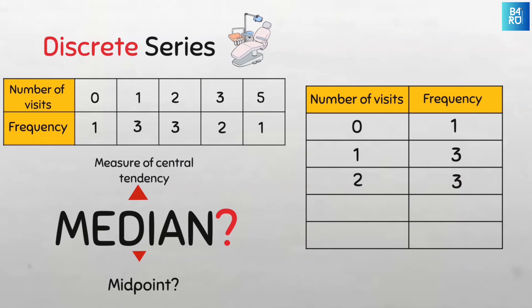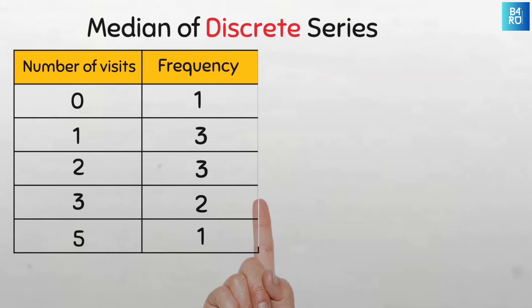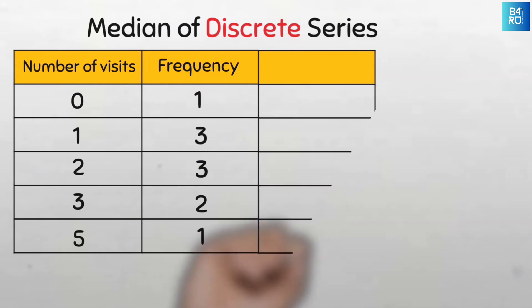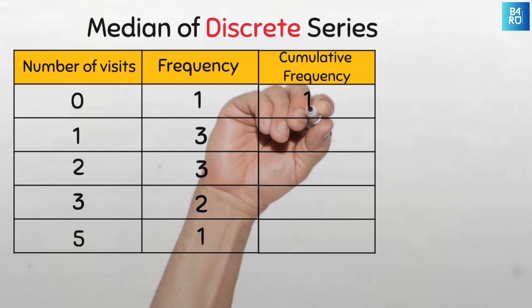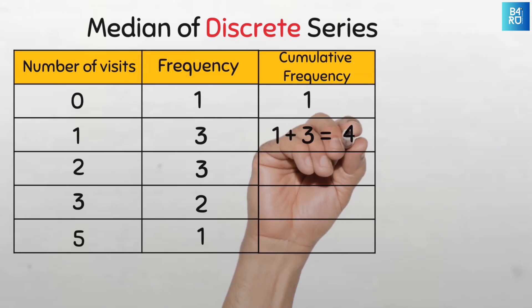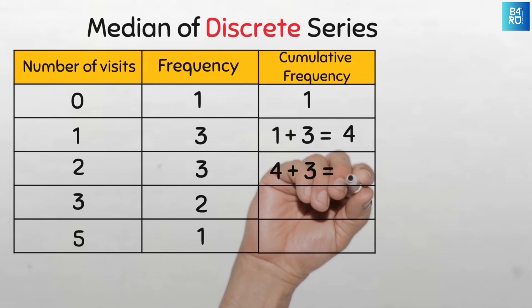To find the median for discrete series, we will need to first compute the cumulative frequency. So let's just create a new column here and we'll call this cumulative frequency. This will be 1, and then the next will be 1 plus 3, so the cumulative frequency is 4, then 4 plus 3 is 7, 7 plus 2 is 9, and 9 plus 1 is 10.